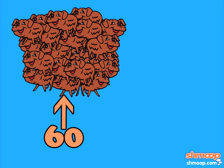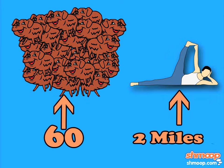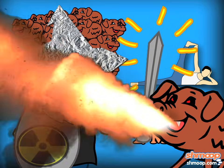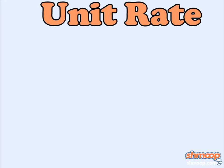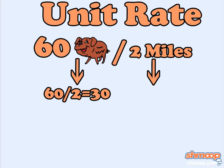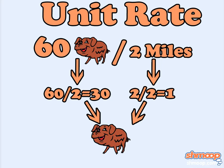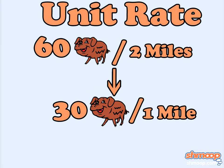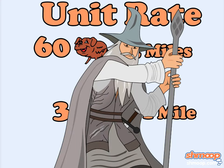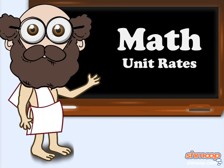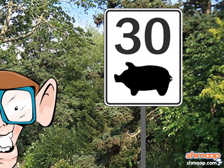If you were to come across sixty warthogs over a two-mile stretch, we'd suggest you get the heck out of there — those things are vicious. In mathematical terms, the incidence of warthogs can be expressed as a rate of sixty warthogs for two miles. However, a unit rate reduces one of the terms to a single unit — it's like magic, or, to use a highly technical term, math. So, we have a unit rate of thirty warthogs per mile.